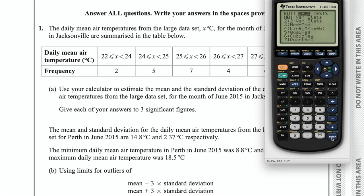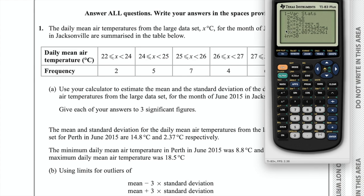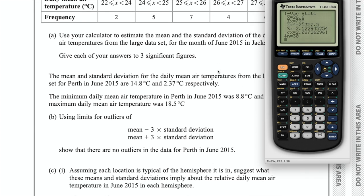That'll appear on your screen. Then put list 1 and list 2, meaning that's the data you're going to be using. Press enter and it'll give you the statistics. You need to know that x-bar is the mean and sigma x is the standard deviation for this sample. Then all we need to do is write those down.